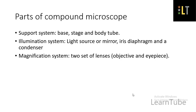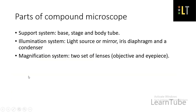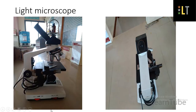The support system usually includes the base, stage, and body tube of the microscope. The illumination system includes the light source or mirror, iris diaphragm, and a condenser. Here is the light source and the mirror, and below the stage there is a condenser and diaphragm.